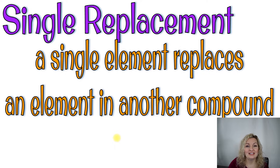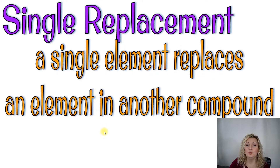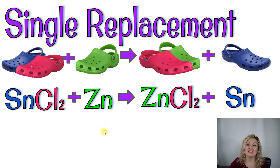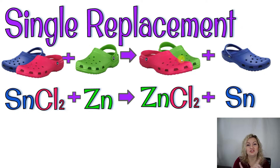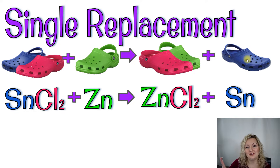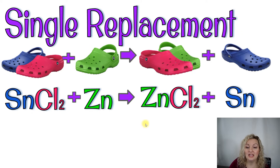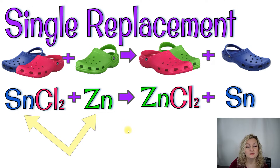Next is single replacement — you'll also hear this as single displacement. A single element replaces an element in another compound, so we're looking for one movement or replacement to happen. With the crocs, we start with our blue and pink pair and add a green one. That yields an exchange: we keep the pink, add the green, and kick the blue to the side. Chemically, we start with SnCl2 and add zinc, yielding ZnCl2 and tin separate — we've replaced tin with zinc.